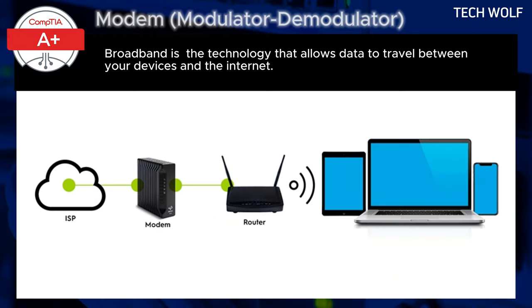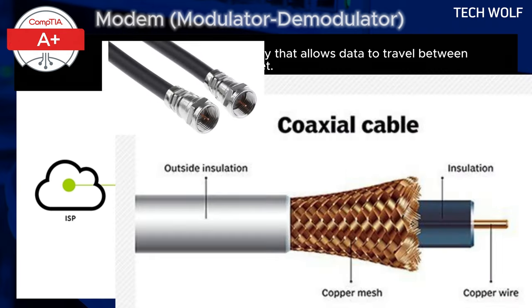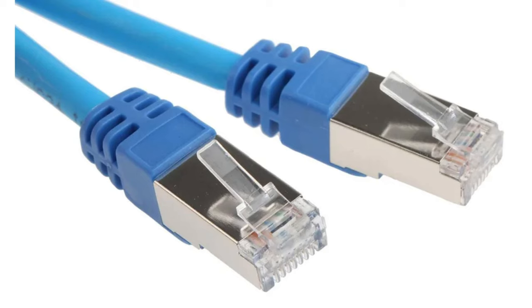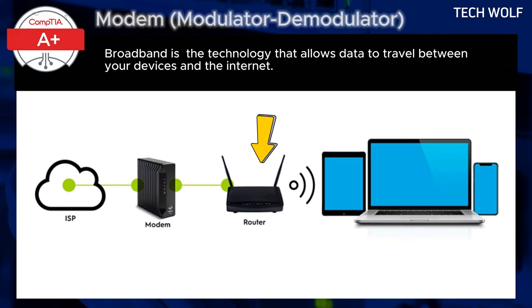Here is a real-world example of a home network setup. In a typical home setup, your ISP provides a cable modem that connects to a coaxial cable using an F-type connector. The modem is then linked to a router via an Ethernet cable. This setup allows all your SOHO — small office home office — devices like laptops, phones, and smart TVs to access the internet through either wireless or wired connection.